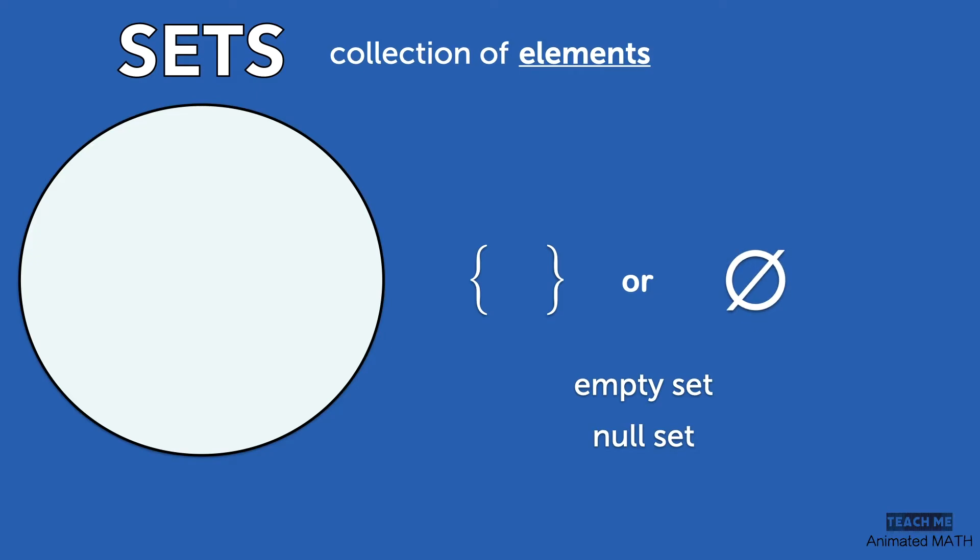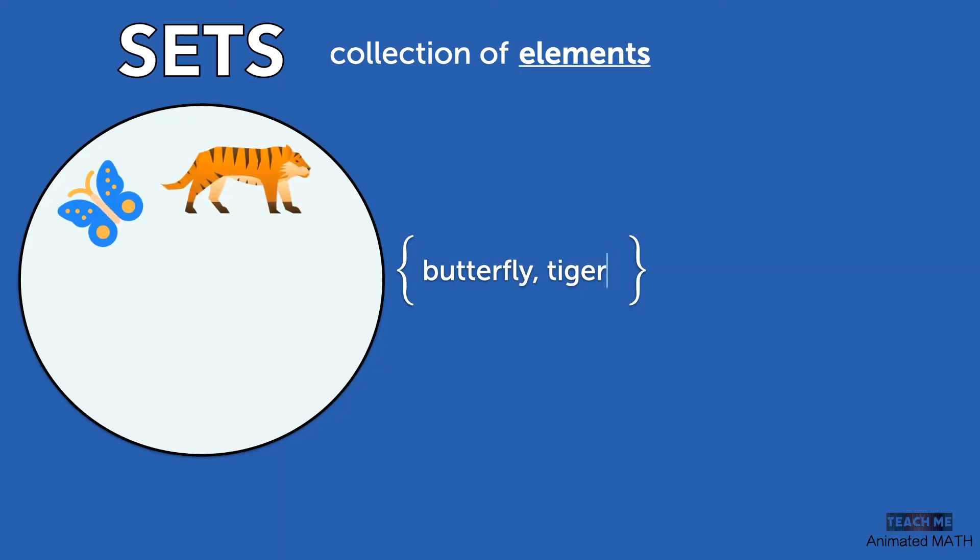Now let me give you an example of a set with one element, a butterfly. The more elements there are in a set, the more we list between the curly braces.